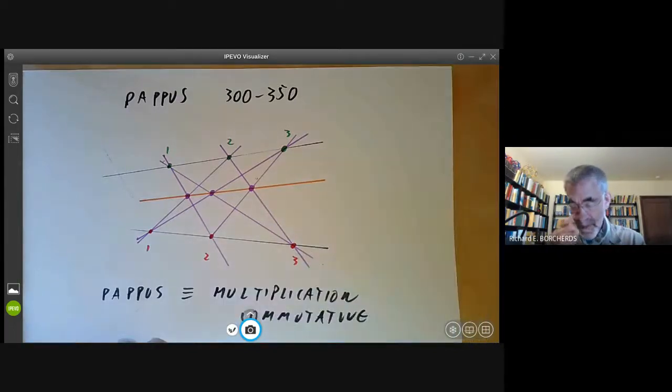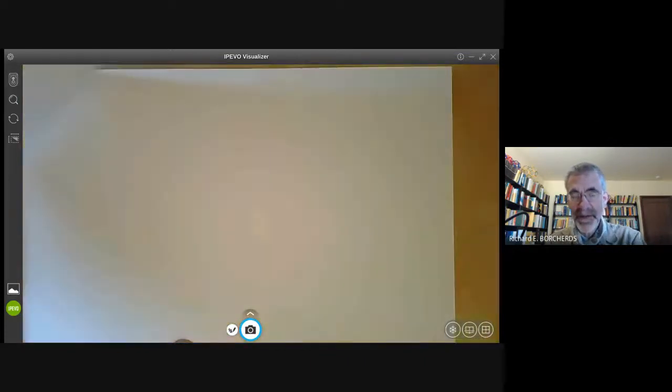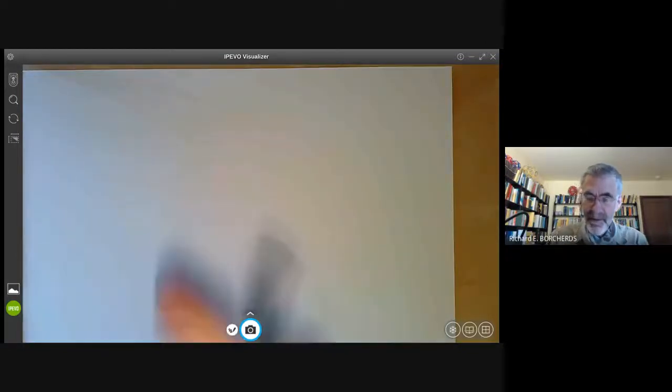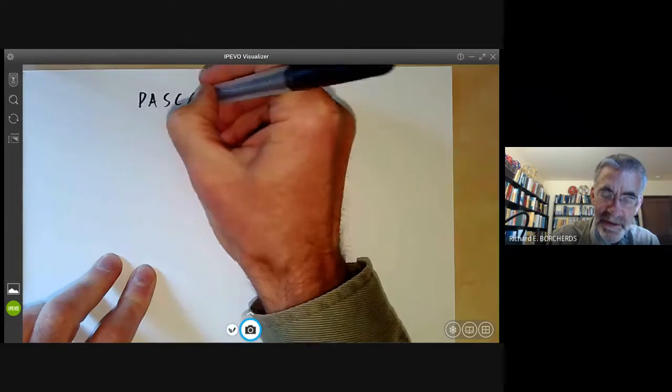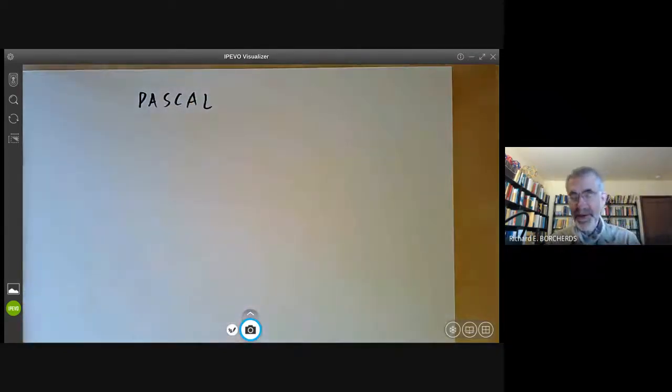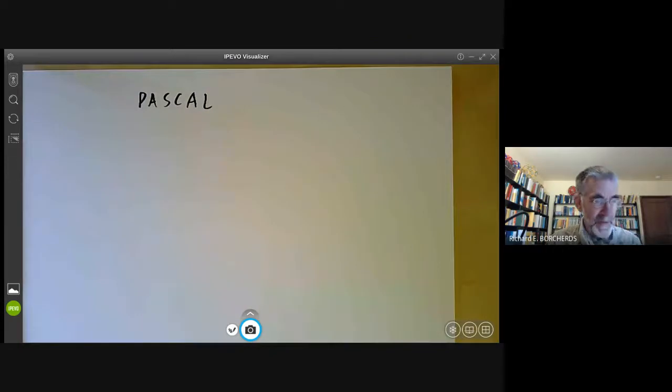Well, we're going to deduce Pappus's theorem as a special case of Pascal's theorem. So Pascal was a French mathematician. He's famous for having Pascal's triangle named after him, although he was nowhere near the first person to think of it. Anyway, Pascal's theorem was discovered when he was a teenager.